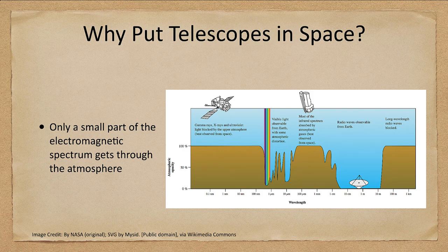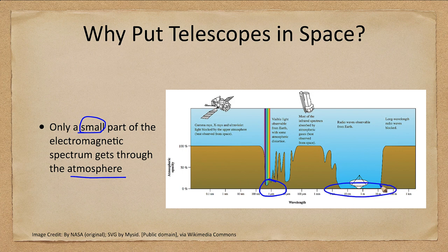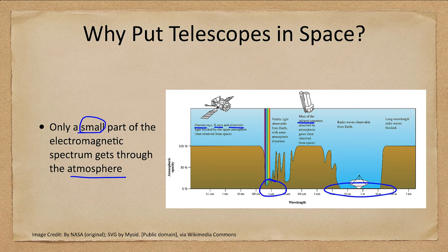The real reason is that only a very small part of the electromagnetic spectrum can get through our atmosphere — most of the visible light and part of the radio waves. However, gamma rays, X-rays, and ultraviolet do not make it through the atmosphere, and much of the infrared is absorbed. So there are many regions we simply cannot see from Earth's surface.